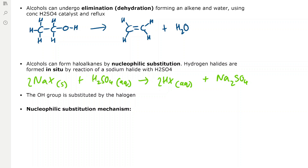We can also form halogenoalkanes from alcohols by the mechanism of nucleophilic substitution. Nucleophiles are electron pair donors, and hydrogen halides are formed in situ by reaction of a sodium halide with sulfuric acid. In situ just means within the reaction itself, so we don't add the hydrogen halide directly.